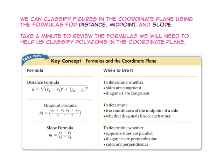If we want to determine whether sides are congruent or diagonals are congruent, we should use the distance formula. If we want to determine the coordinates of the midpoint of a side, or whether diagonals bisect each other, we should use the midpoint formula. If we want to determine whether opposite sides are parallel, diagonals are perpendicular, or sides are perpendicular, we should use the slope formula.